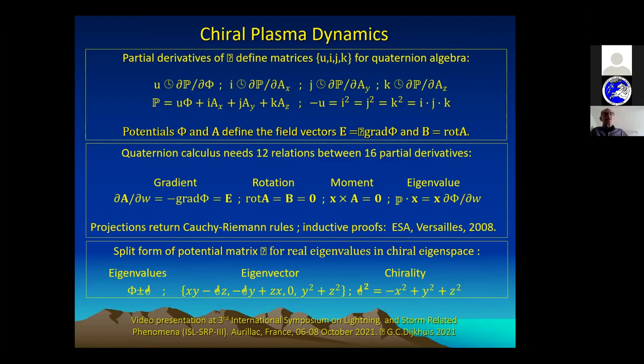You can check this by making projections on three faces, then you will get the familiar Cauchy-Riemann rules that you use for complex mapping. These formulas you see for gradient, rotation, moment, and eigenvalue—I gave inductive proofs for them. The inductive proofs for these 12 relations I published at an Asia conference at Versailles in 2008.